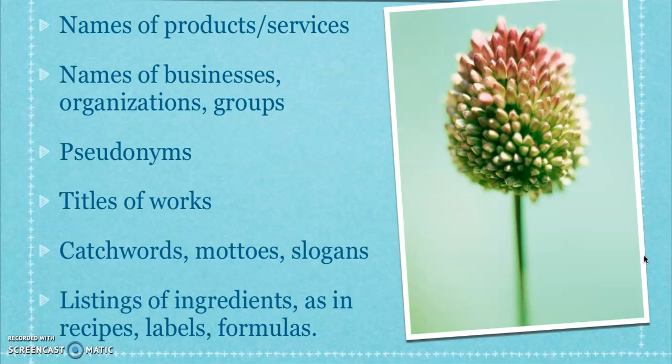The listing of ingredients in recipes, labels, and formulas are not copyrightable. When you're cooking, so many different ingredients are going to be similar — if you're looking up a recipe for pot roast, for instance, all those ingredients are pretty much going to be the same give or take. So you can't copyright the list of ingredients. In a recipe, the thing that's copyrightable is actually the directions and how the directions are written.